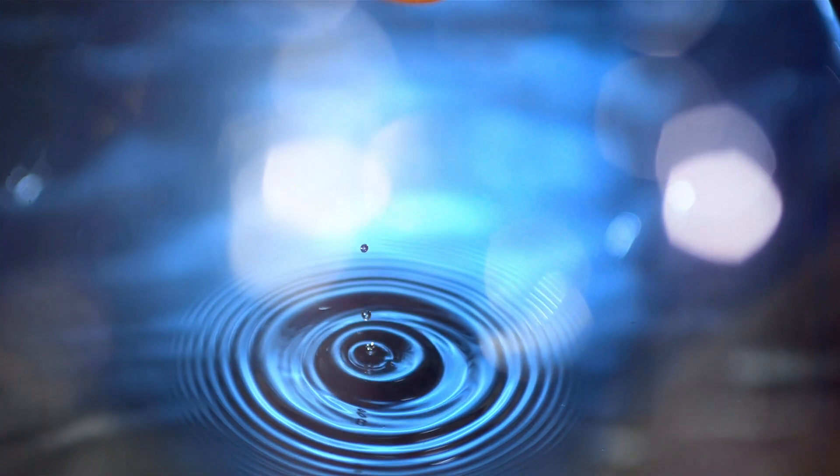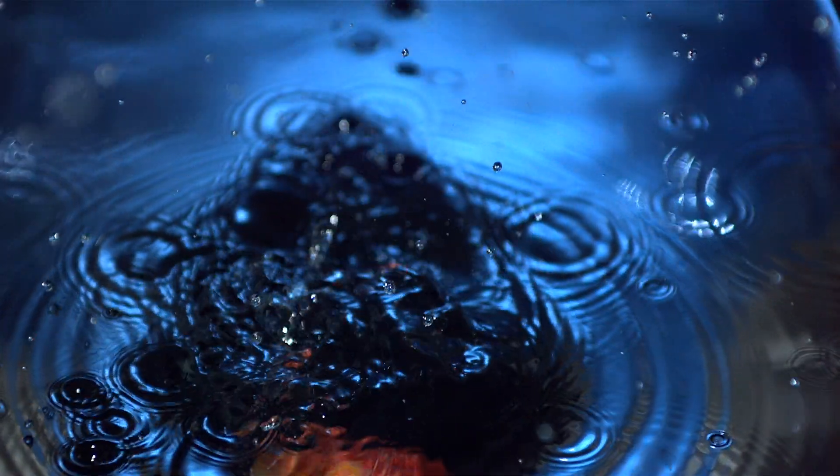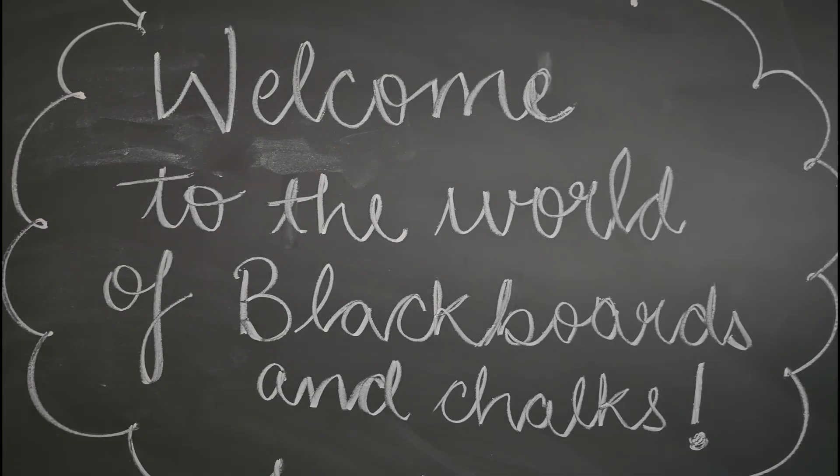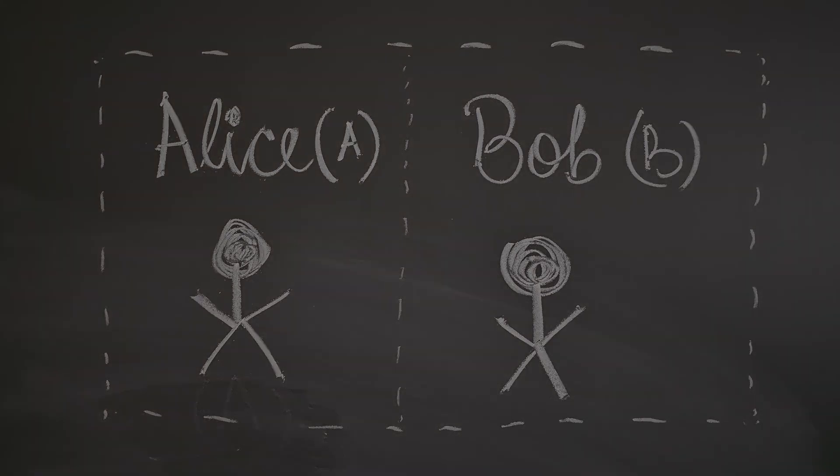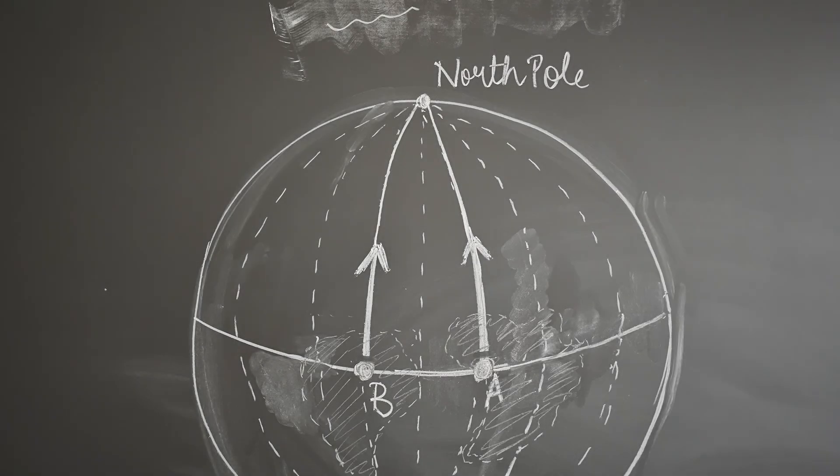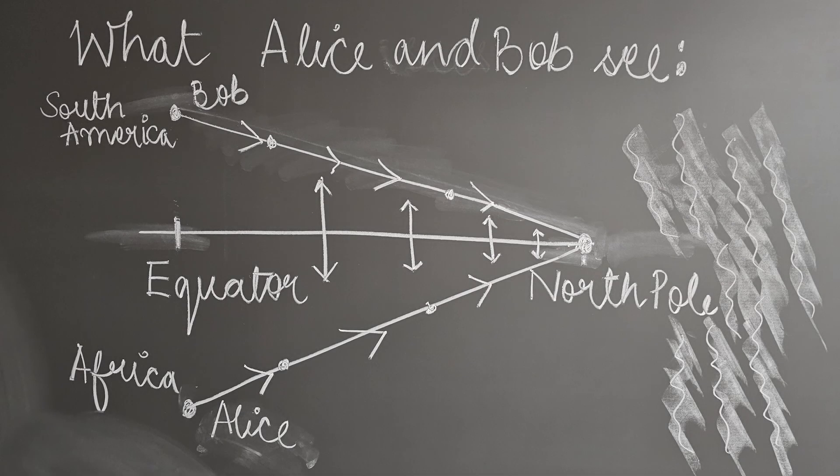And how did it explain the force, the force of gravity? This is simple to understand when one looks at the following example. Consider two people, say Alice and Bob. They both decide to walk on Earth from the equator to the North Pole to see northern lights. Alice starts from Africa and Bob starts from South America.